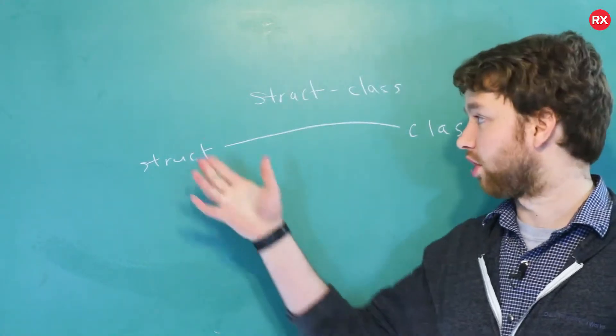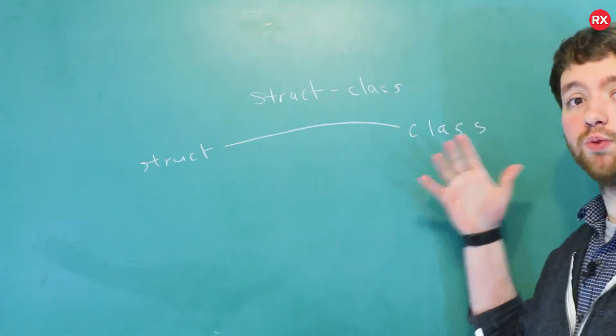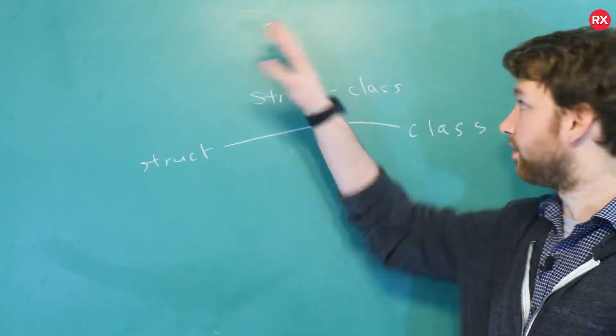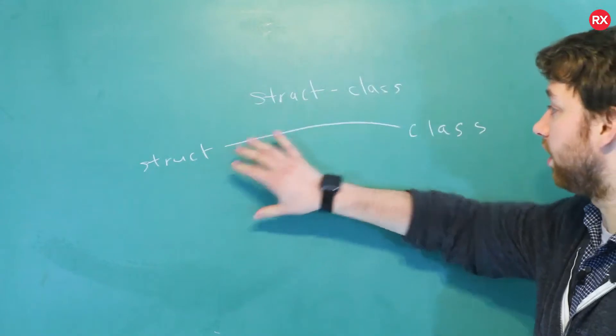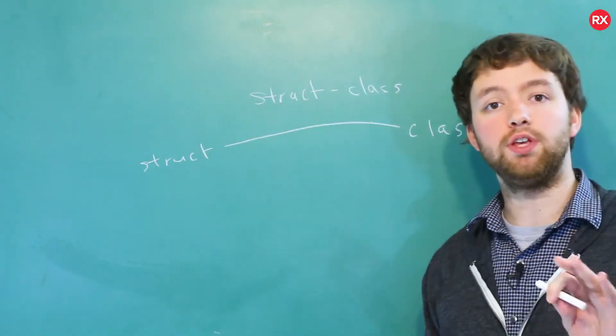For example, in C#, structs are value types, classes are reference types. In C++, they're the same thing essentially. Other languages, not so much. So do keep that in mind.